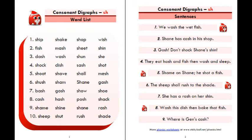Seven: bash, gosh. Show, shoe. Eight: cash, hash, posh, shack. Nine: shame, shine, Shawn, rash. Page 8, consonant digraphs: sh. Sentences. One: we...